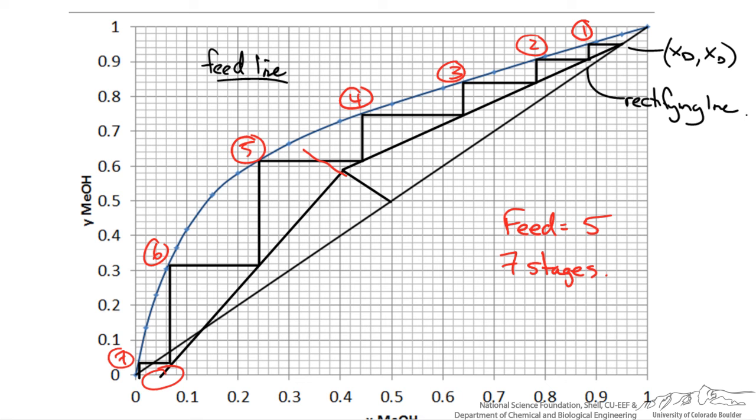The big difference with open steam heating is this point down here in which our intercept is at y equals 0, x equals the bottom composition. Hopefully that gives you an idea of using open steam heating in a distillation column.